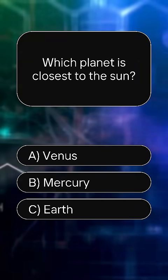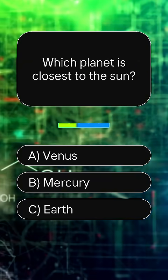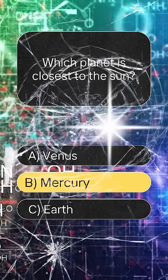Which planet is closest to the sun? Answer B. Mercury.